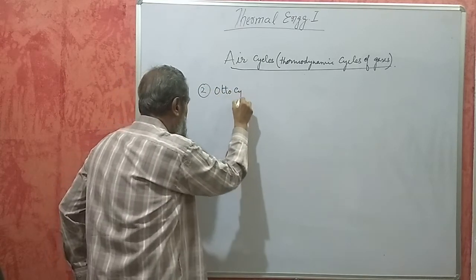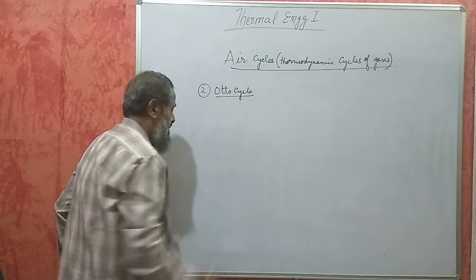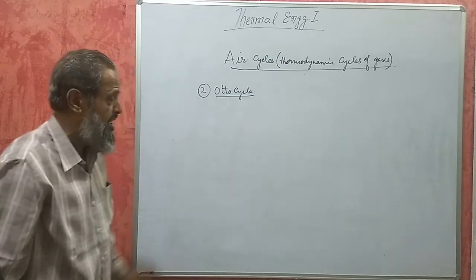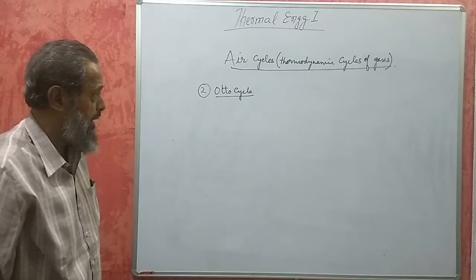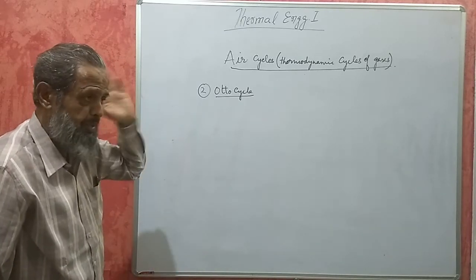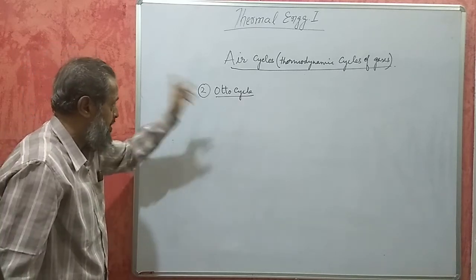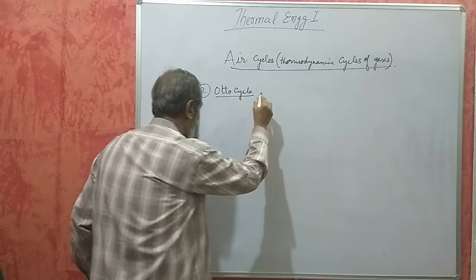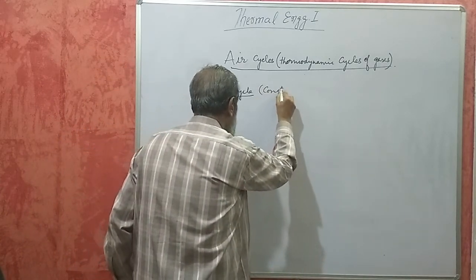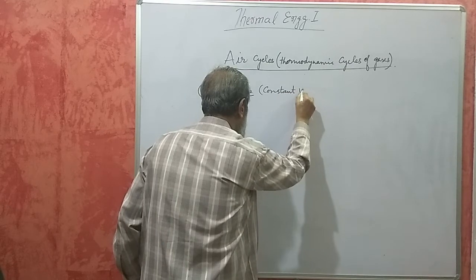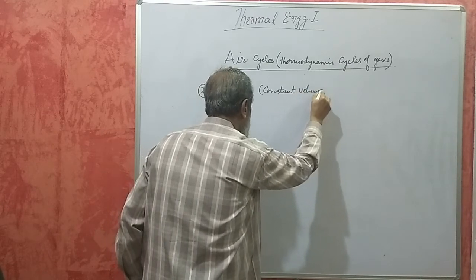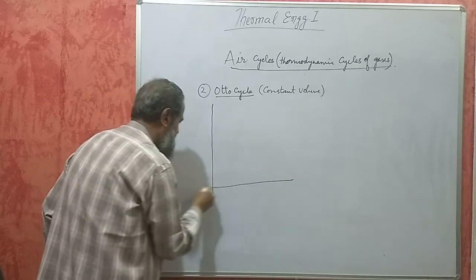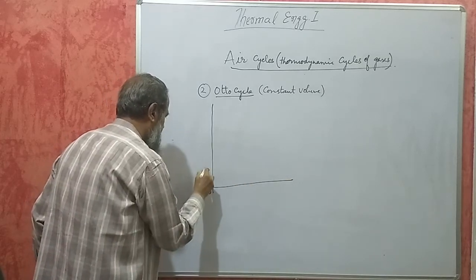The second cycle is the Otto cycle. All spark ignition engines — engines where ignition takes place due to an electric spark, such as petrol engines and gas engines — work on the Otto cycle. It is also called the constant volume cycle.